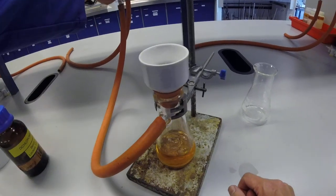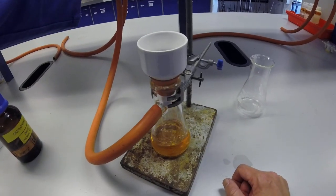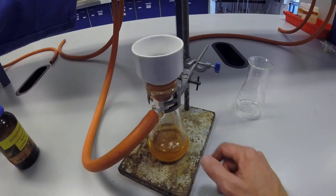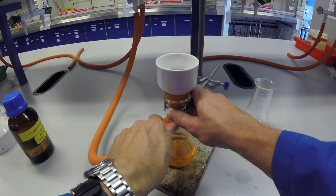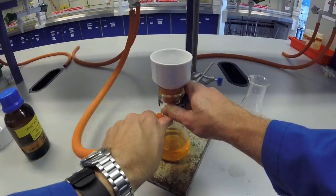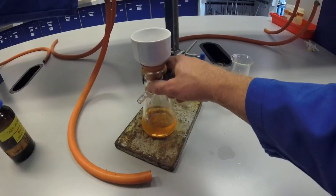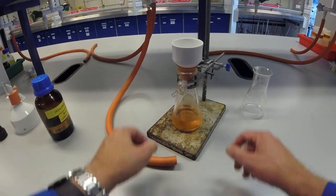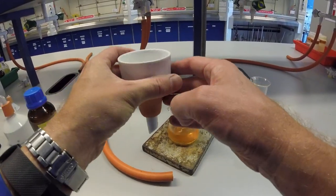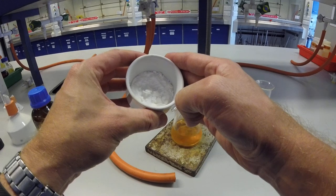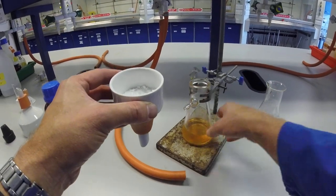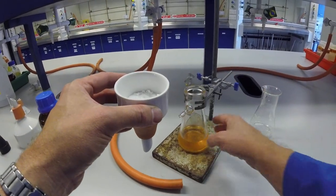Once we're done, we can then turn the vacuum off. First of all, disconnect the tap before fully turning off, and then switch the vacuum off. And then we have our solids in here and our liquid there. Sometimes you might need the solid, sometimes you might need the liquid instead.